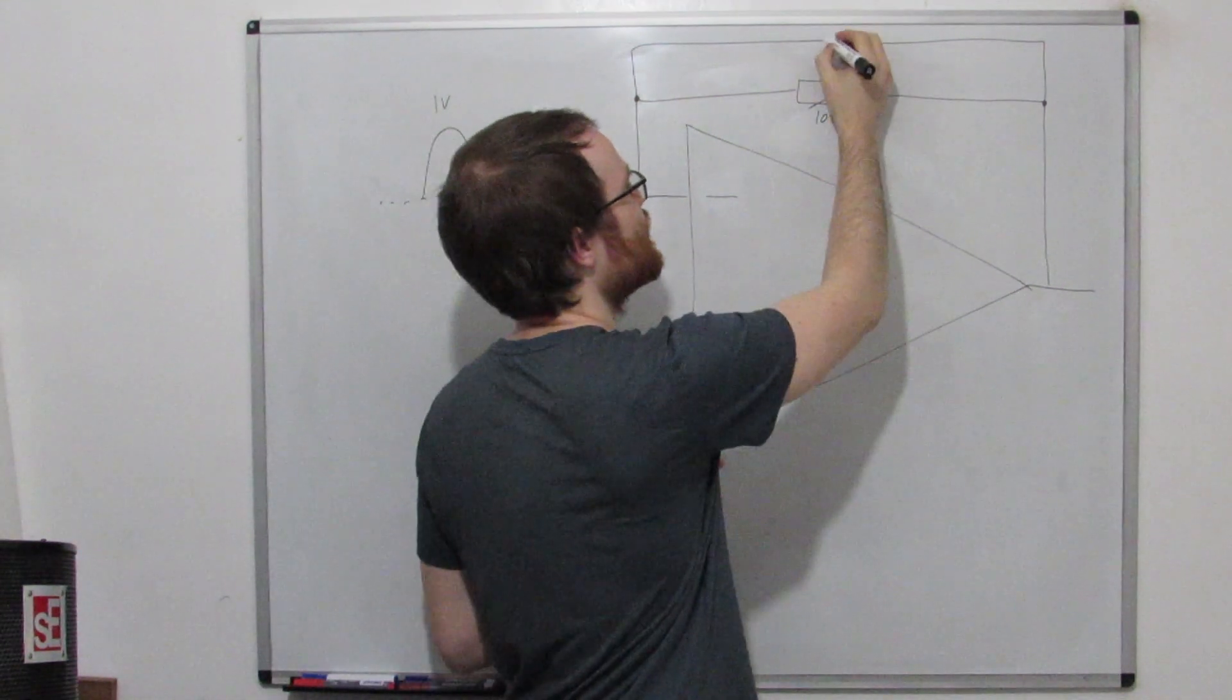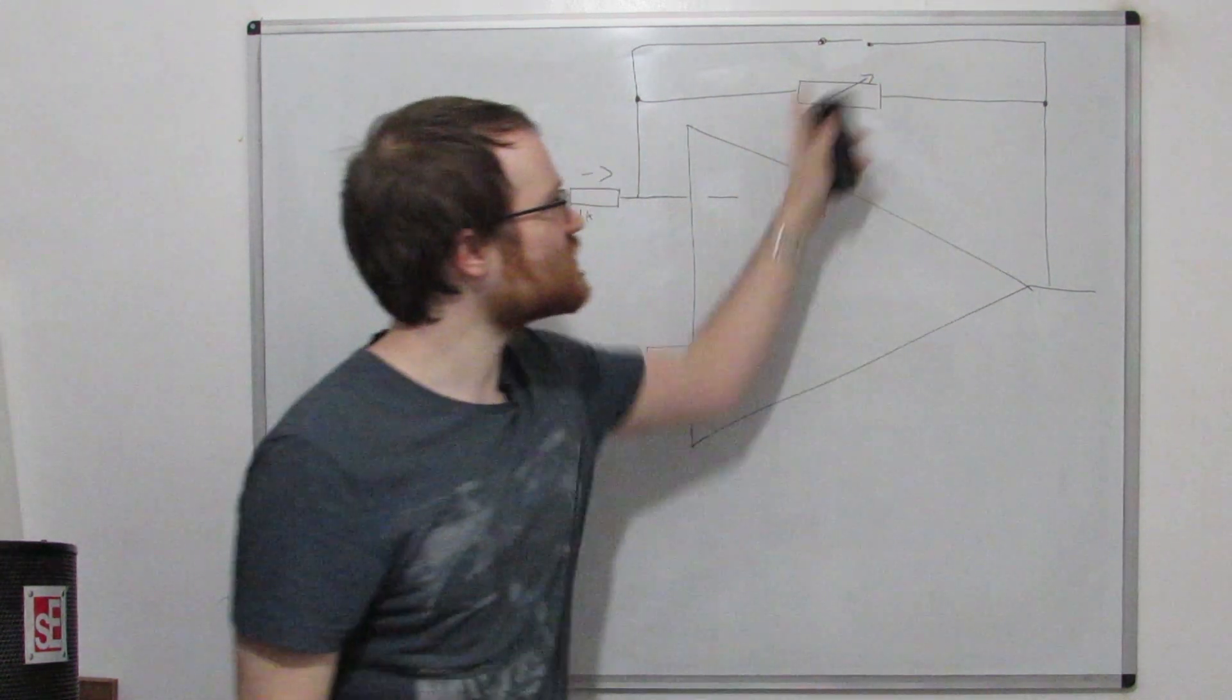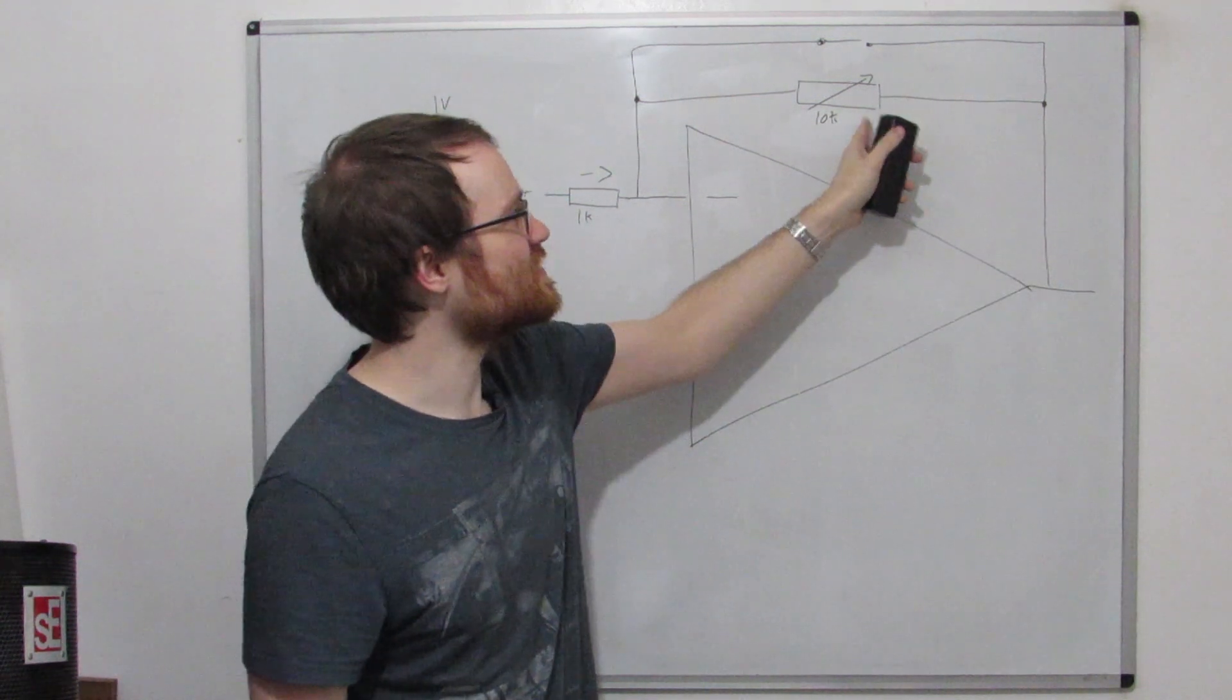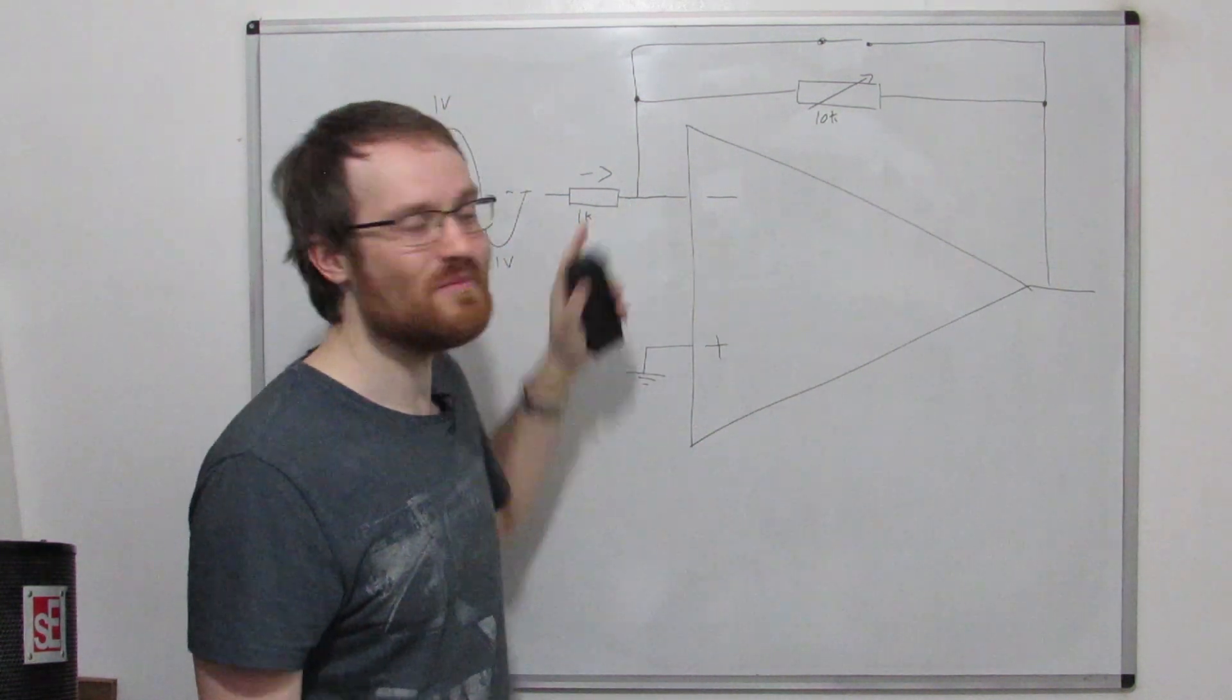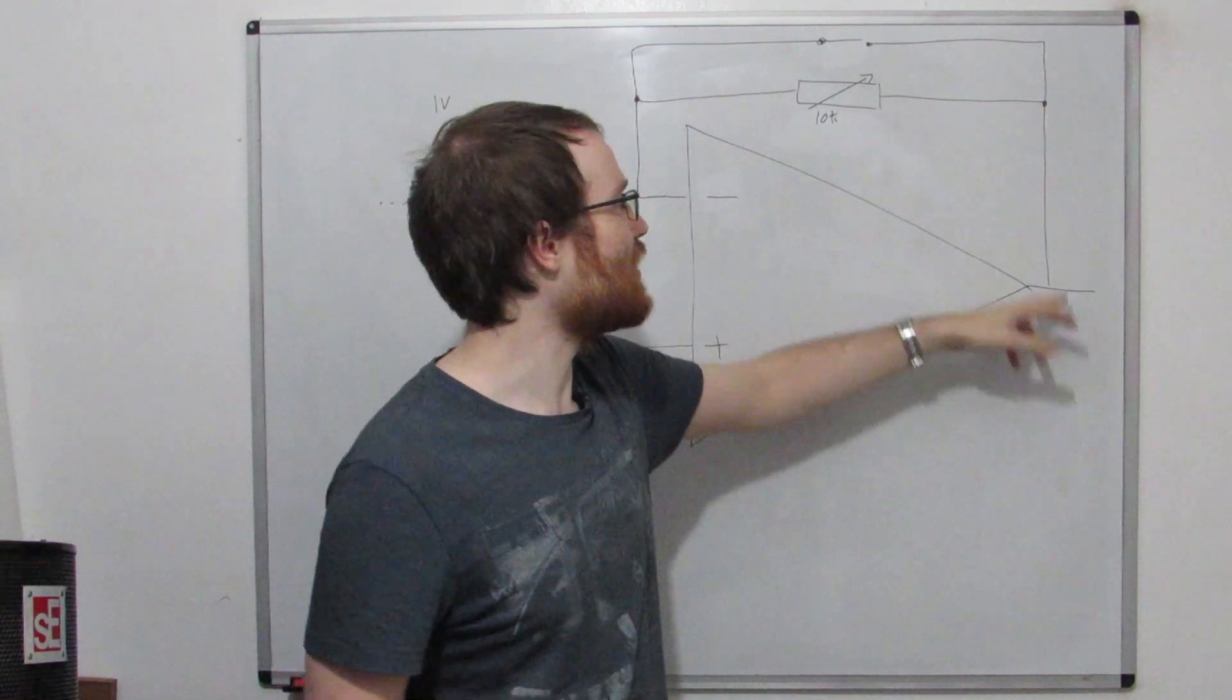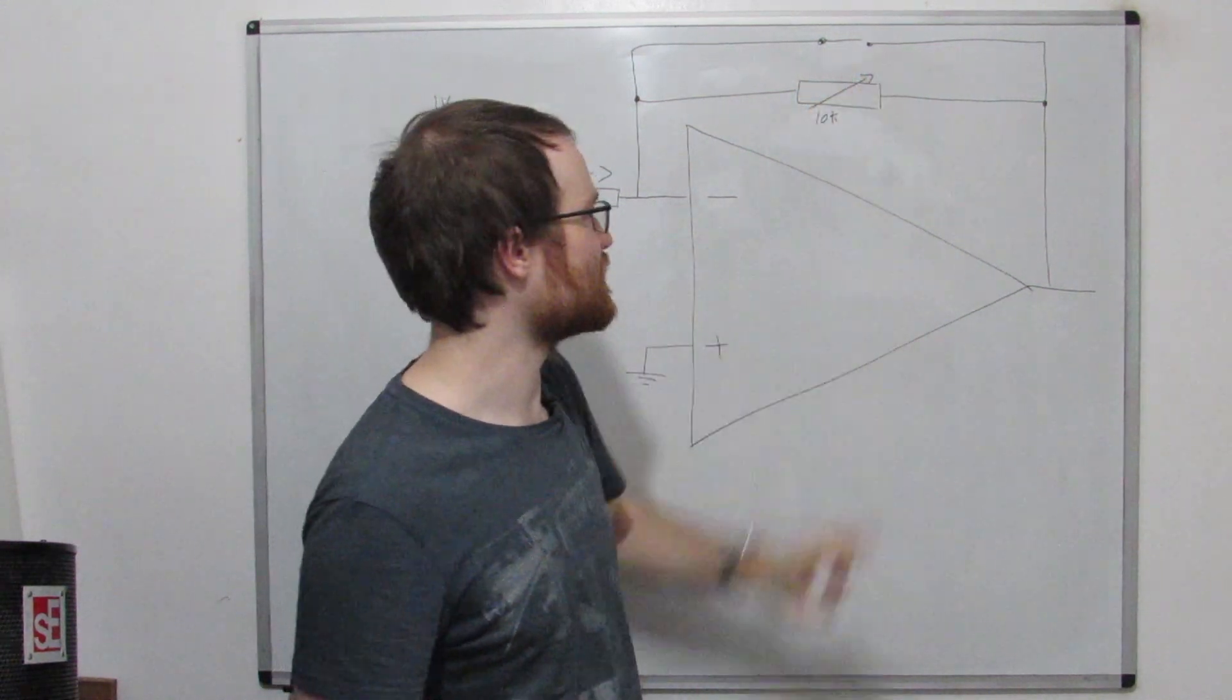But when we have the capacitor in, and we think about the high frequencies, well that short circuits this, and the op-amp output can bypass this resistor and oppose the input with almost no effort. So what we're saying is that at high frequencies, the output can bypass this resistor because this capacitor looks like a short circuit at high frequencies,